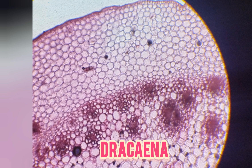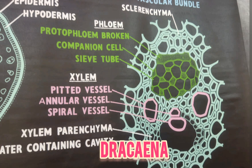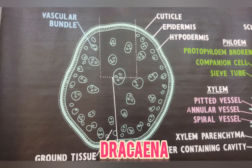Secondary growth is initiated by the formation of a special meristematic zone which develops in the inner cortical region. The cortical cells lying external to the vascular bundle develop into a multi-layered cambium. The cambium behaves abnormally.